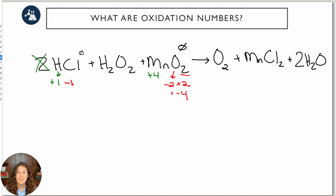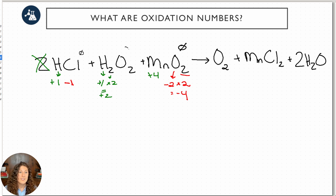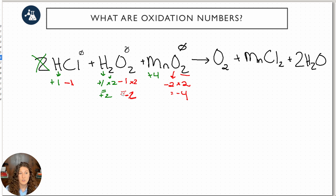Now let's go back to hydrogen peroxide and apply the exception. Hydrogen always has to be plus one; with two hydrogens, that's plus two. The overall molecule is neutral, so we need negative two total from the two oxygens. Dividing negative two by two means each oxygen is negative one. Negative one times two gives negative two, confirming the molecule is neutral. So for hydrogen peroxide, oxygen is negative one — compared to negative two in manganese oxide.